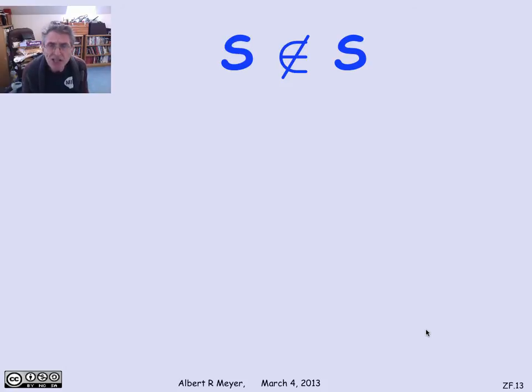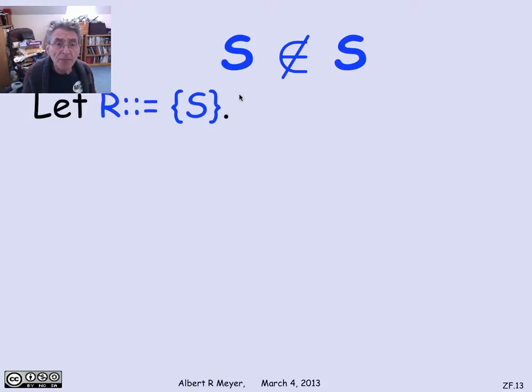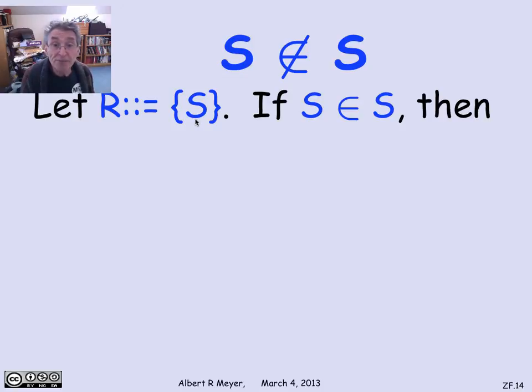What does the foundation axiom have to do with membership? The foundation axiom lets us conclude that no set is a member of itself. How does that work? Suppose you're interested in some set and want to verify it can't be a member of itself. Let r be the set consisting of just this set s. R is the singleton {s}. R is not empty, so by the foundation axiom, it must have a membership minimal element.